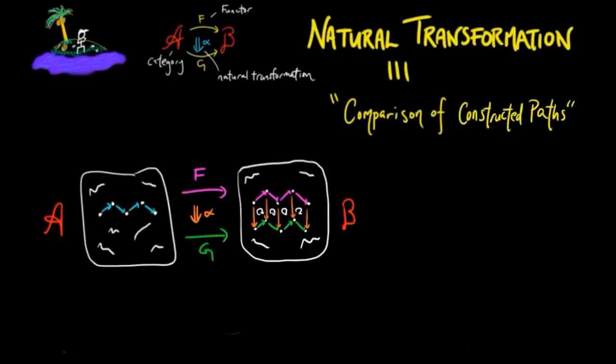It is verified by showing the resulting squares each commute, and a commuting square means that the two paths F followed by G and F' followed by G' result in the same morphism.